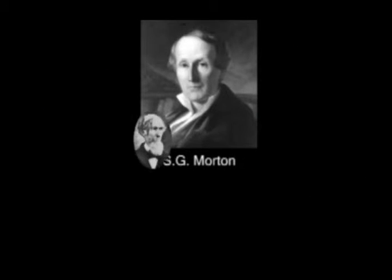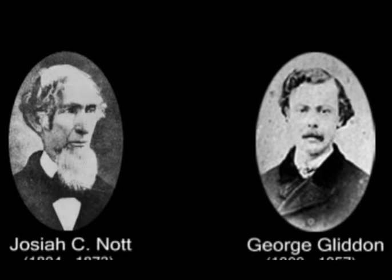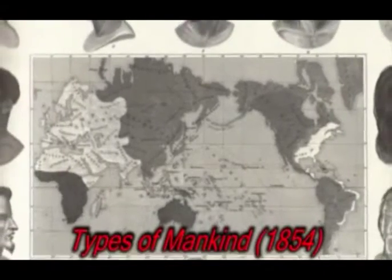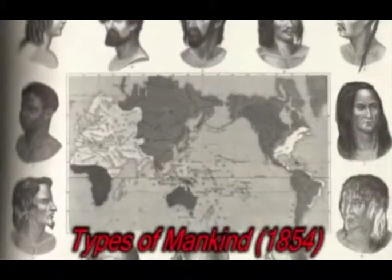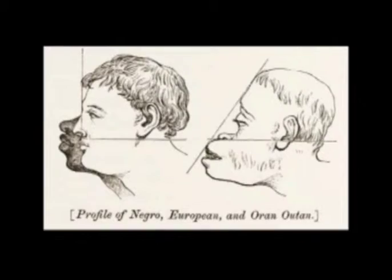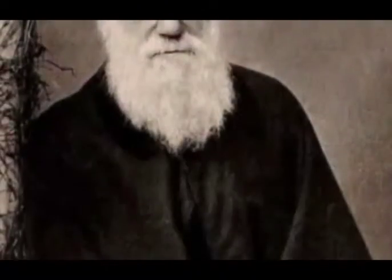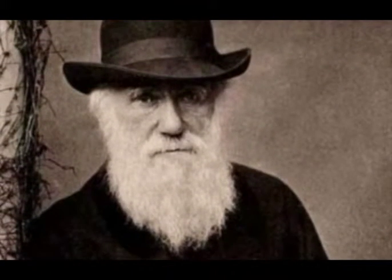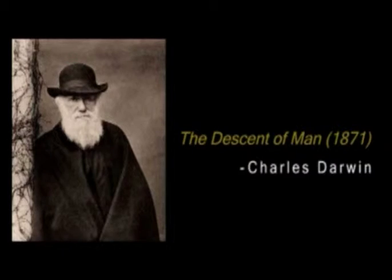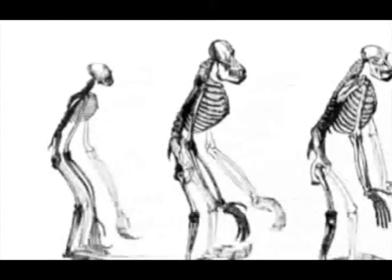Morton's followers, particularly Josiah C. Nott and George Gliddon, in their monumental tribute to Morton's work Types of Mankind, carried Morton's ideas further and claimed that his findings supported the notion of polygenism, which claims that humanity originates from different lineages and is the ancestor of the multiracial hypothesis. However, Charles Darwin opposed Nott and Gliddon in his book The Descent of Man, arguing for monogenism of the species. Darwin conceived the common origin of all humans — that is, the single origin hypothesis — as essential for evolutionary theory.